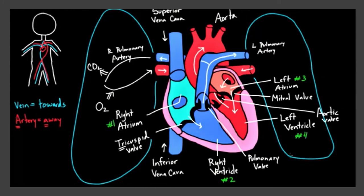Now we will do a quick revision. First step: the blood enters into our heart through the superior vena cava and the inferior vena cava and is poured into the right atrium. From there the tricuspid valve opens and it enters the right ventricle. From there the pulmonary valve opens and through the pulmonary artery it goes to the lungs for oxygenation. At the lungs it is oxygenated and sent back via the pulmonary vein. The pulmonary vein pours the blood into the left atrium. From there the mitral valve opens and the blood reaches the left ventricle. From there the aortic valve opens and the blood passes through the aorta — the largest artery in the human body — which then gets divided and blood is distributed to all parts of the body.